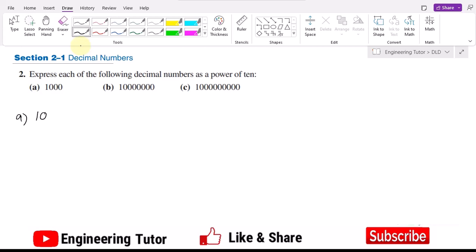We can see here that we have 1000, and for representing it first of all I have to write 10. After it I have to count the number of zeros here, so this is 1, 2, and 3. I have 3 zeros here, so I will write 10 to the power 3, which is equivalent to 1000.